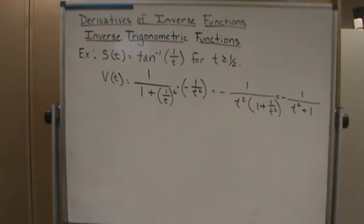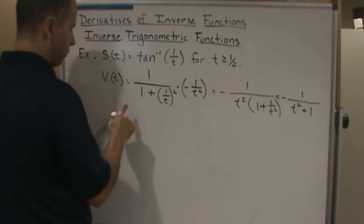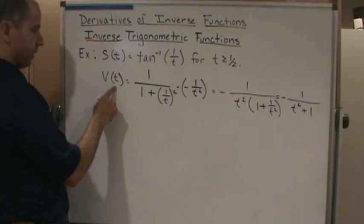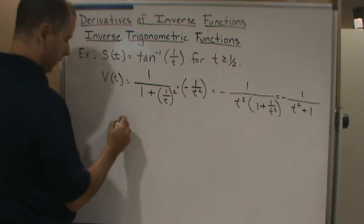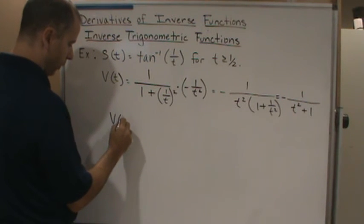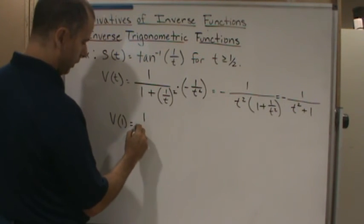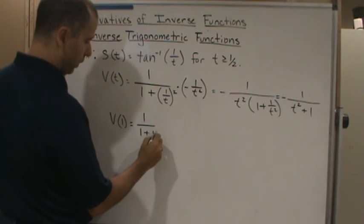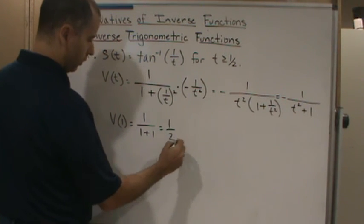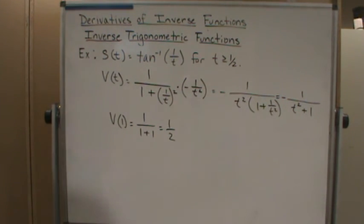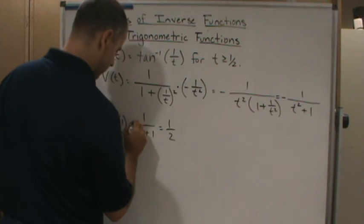Now they want to evaluate this velocity function at t equals 1. That means v(1) equals 1 over 1 plus 1, or 1/2. So that is the velocity—or negative, I forgot my negative—negative 1/2.